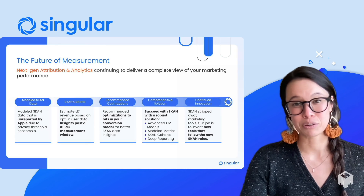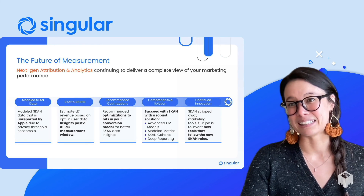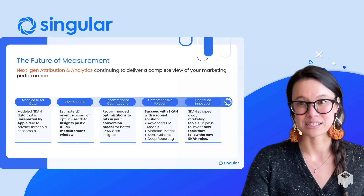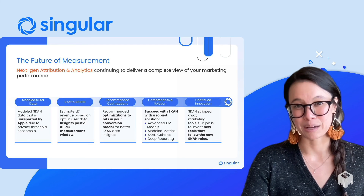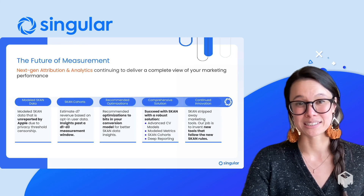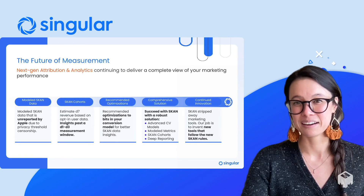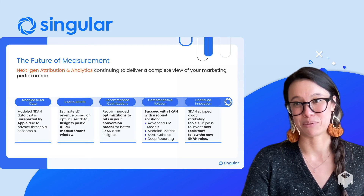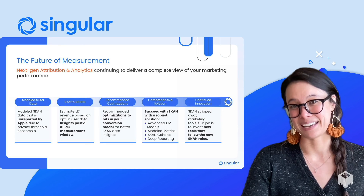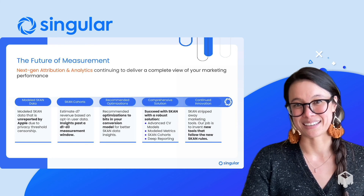The future of mobile measurement is definitely privacy-first, and specifically on iOS, a single view that brings back reliable KPIs, cohorts, and ROAS analysis. Together, we believe that MMPs, marketers, and media platforms can collaborate to tackle today's and tomorrow's challenges with privacy-first mindsets.